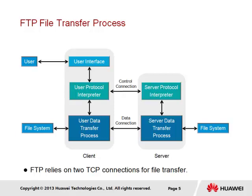Once the control connection is established, the server protocol interpreter will notify the client protocol interpreter of the port on which to listen — that is, by default port 20 — which will then be relayed to the data transfer process of the client.